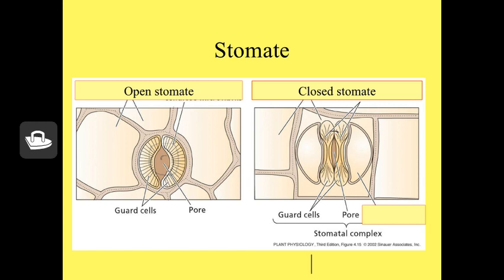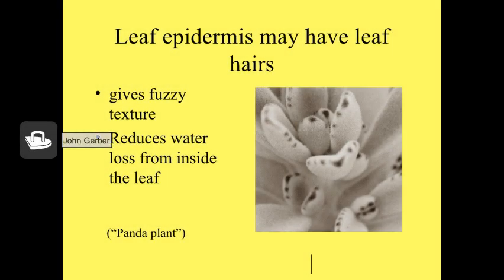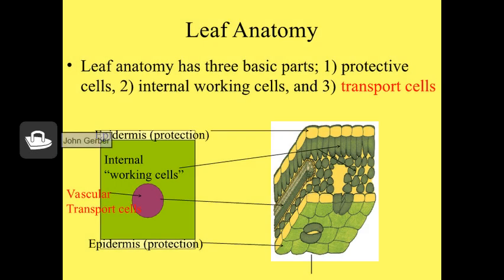When the two guard cells are deflated, the stomatal pore closes, and when they inflate with water, the stoma opens. Some plants appear fuzzy because the epidermal cells grow out like hairs from the leaf surface to prevent water loss. Next we have the vascular system, or veins, which contains both xylem and phloem, carrying water and sugar throughout the plant.